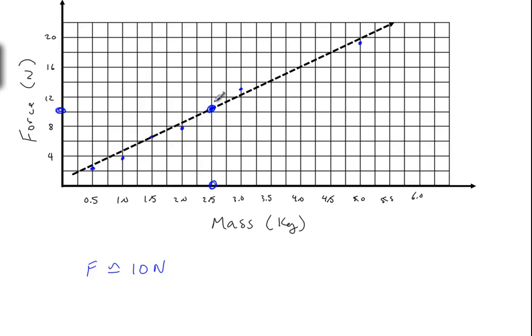Okay, so we can say that approximately, the force will be approximately 10 newtons. Okay, and this is called interpolation. When we're getting information from within this line, it's called interpolation. If we were extending the line way out here and we wanted to figure out, hey, with a mass of 10 kilograms, what's the force? That would be extrapolation. But inside is called interpolation.